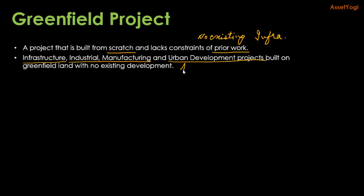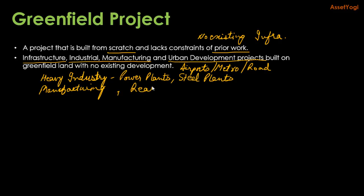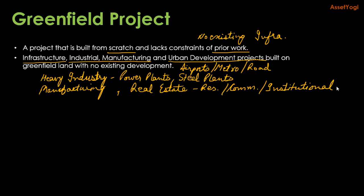It can include infrastructure projects like airports, metros, or road development projects. Or it can include heavy industry projects like power plants, steel plants, or shipbuilding. It can also include greenfield manufacturing facilities for automobile industries, textile industries, or any kind of factories. Then it can also include real estate projects — any kind of residential, commercial, or institutional projects. So any kind of project built on greenfield land with no prior development is called a greenfield project.